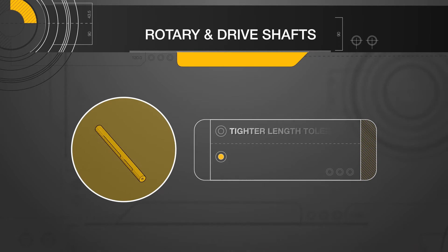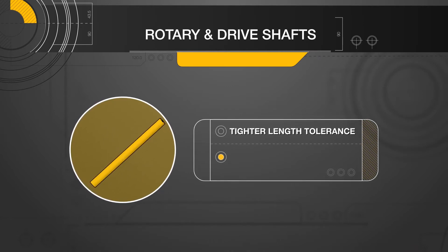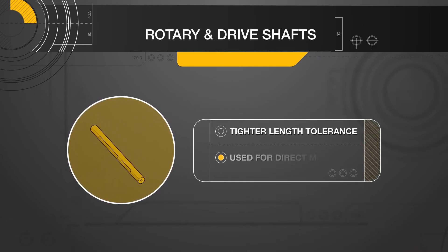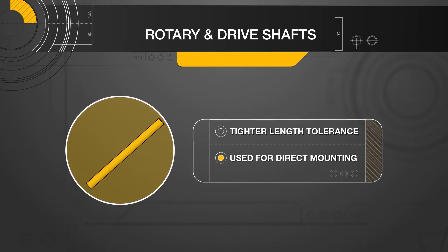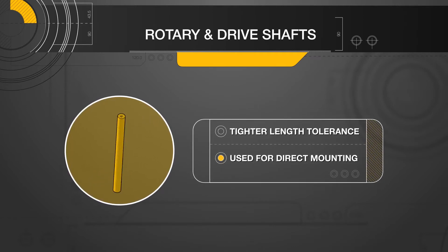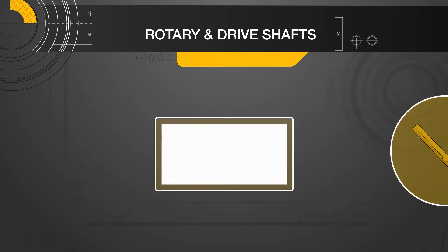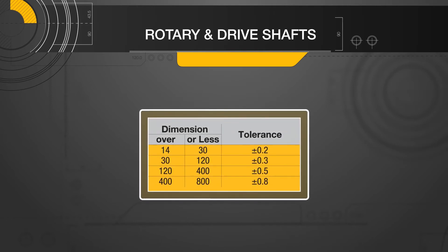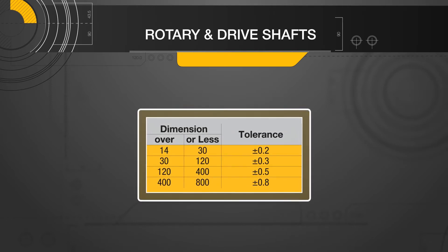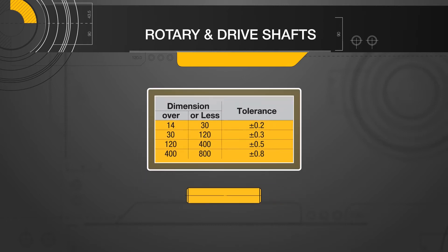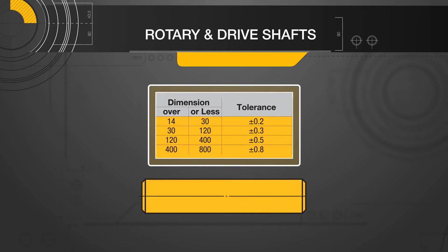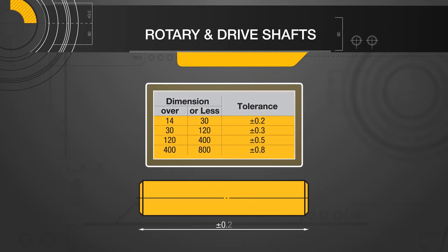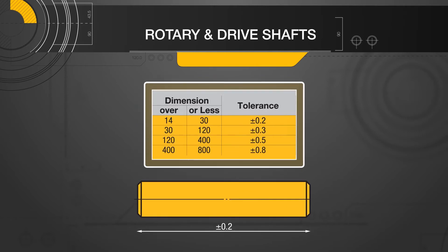Drive shafts have a tighter length tolerance than rotary shafts. This is because drive shafts can be used for direct mounting, where the length tolerance is important. Here are the tolerances of rotary shaft lengths, showing that tolerances are different depending on the length range. Comparing to drive shafts, they have a tolerance of plus or minus 0.2 millimeters at any length.